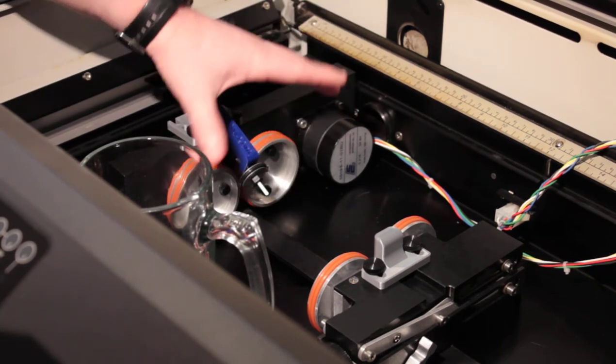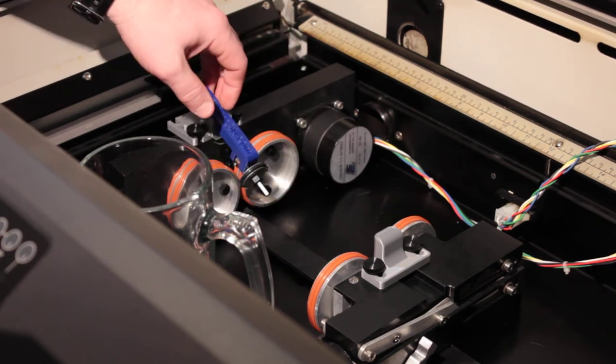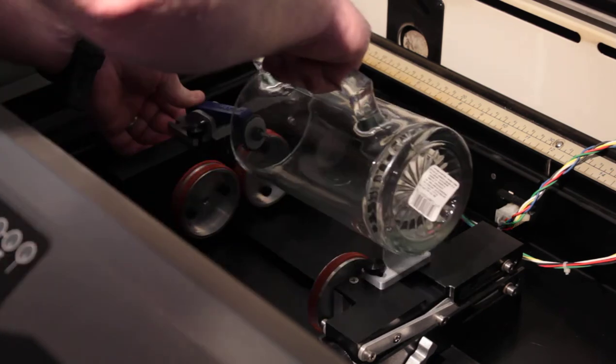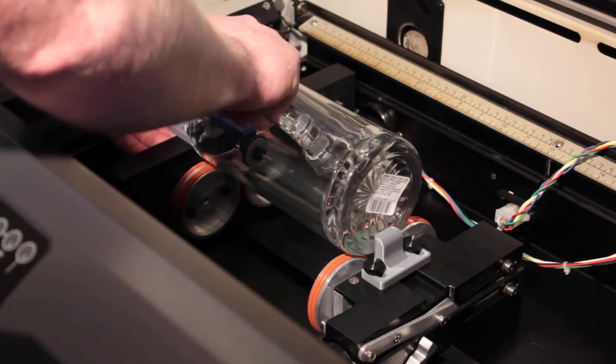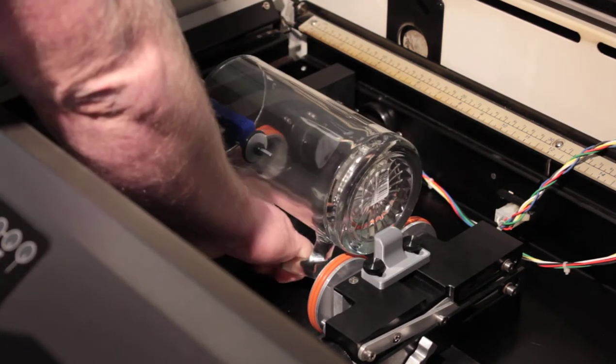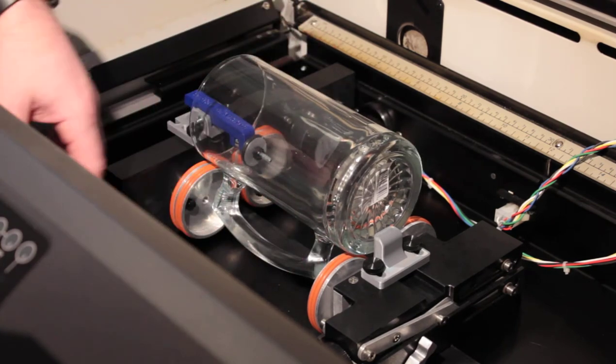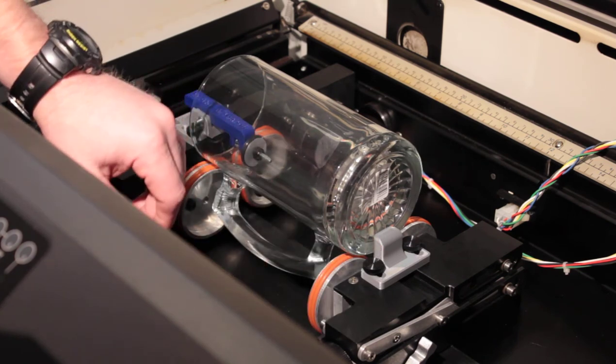But the backstop allows you to have a set position for every cup, so it just goes right up against the back side of it. And the mug can pass through, the handle can pass through between your wheels with no problem, so this allows you to get the correct positioning of your cup every time.